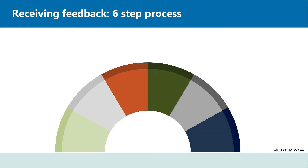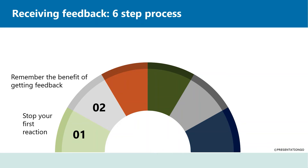Now that we have covered some general tips, let us break down the process of receiving feedback. Here are six steps which we suggest you follow whenever you receive feedback — this will help you understand and apply it. Step 1: Stop your first reaction. It's always useful to stay as neutral as possible and find out what exactly your supervisor means before allowing yourself to react or have an emotional response to feedback. Step 2: Remember the benefit of getting feedback. Keep in mind that feedback is there to help you improve — it's not meant as negative criticism of your work.